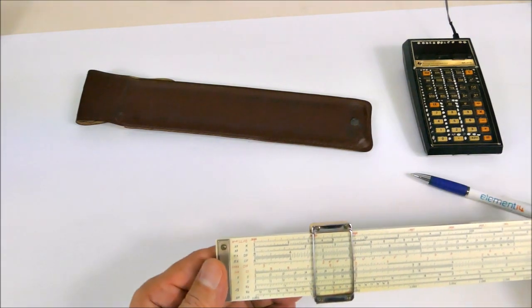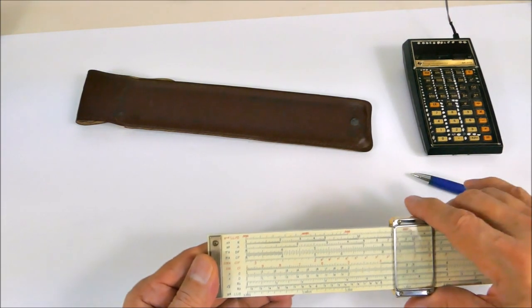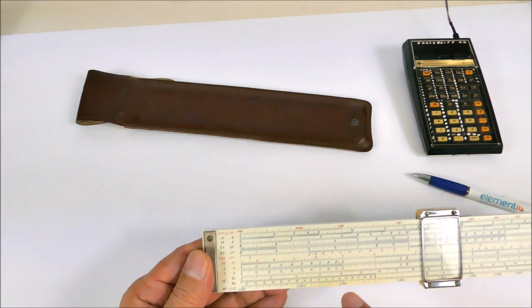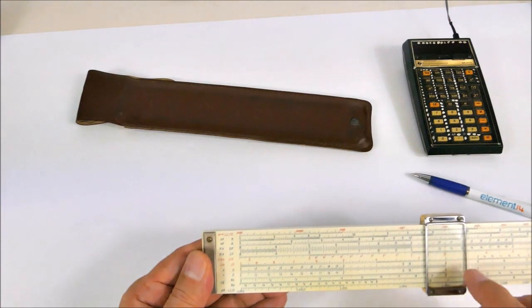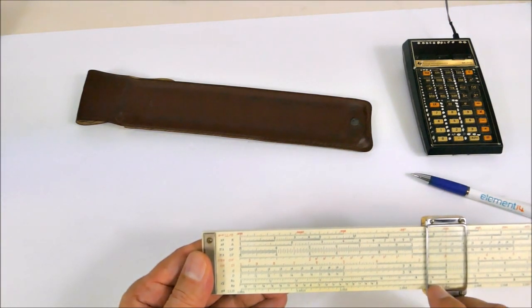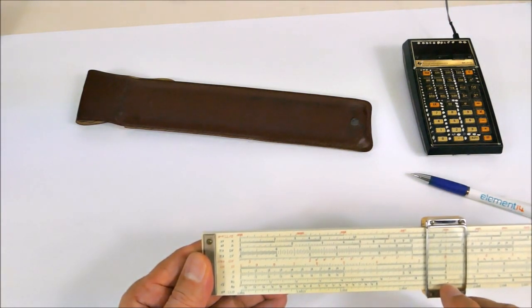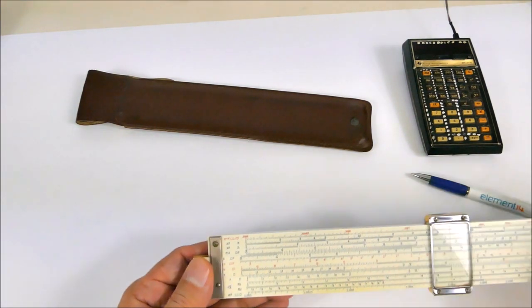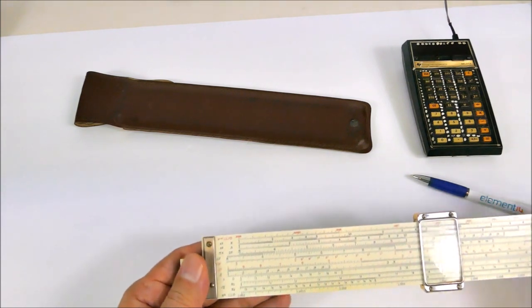But what else can we do? We can do square roots. Suppose we want to do square root of four, and obviously that's going to be two. But if we wanted to do 40, we would read it off here, 6.2. And we don't have to use the middle slider for any of those kinds of calculations, we just use the cursor.